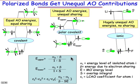These equations come from LCAO theory, and they account for the energy interaction diagrams we see here. The upper energy is most closely associated with the atomic orbital energy it's closest to — that would be α₂, the atomic orbital of the carbon atom in the case of the carbon-fluorine bond.